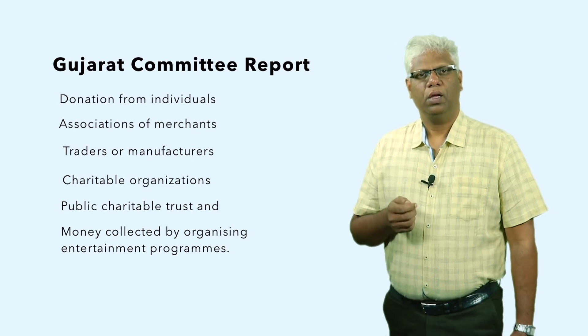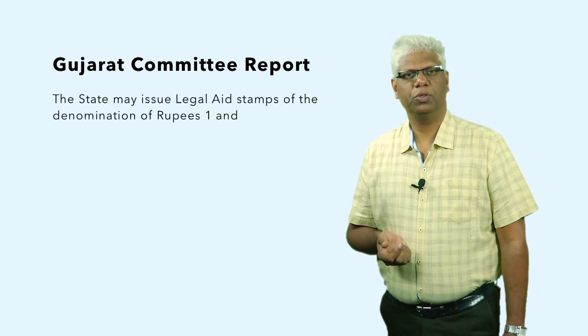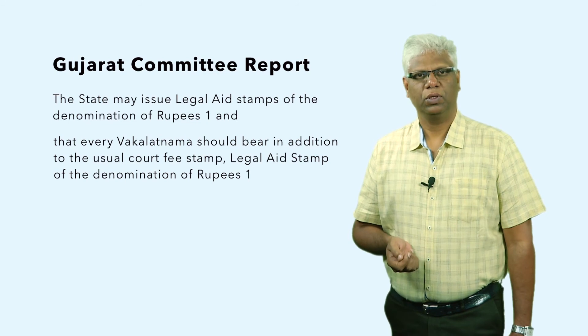The report further suggested that the state may issue legal aid stamps of rupee one denomination, and every Vakalatnama should bear a legal aid stamp. The revenue received should be handed over to the state legal aid committee as part of the legal aid fund. The report also suggested levying a legal aid cess in all litigations where financial stakes exceed Rs. 50,000. The state legal aid committee could also form a society under the Societies Registration Act — a legal aid association — with the legal aid fund raised through annual subscriptions from members.